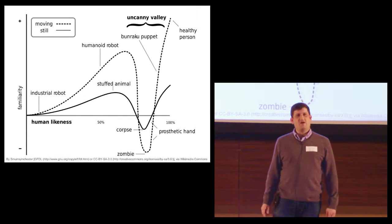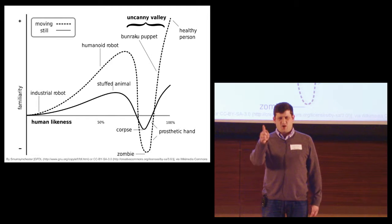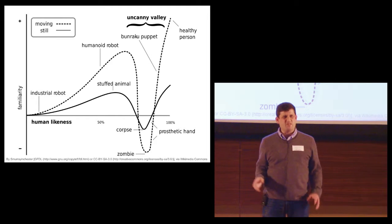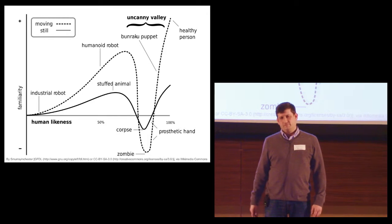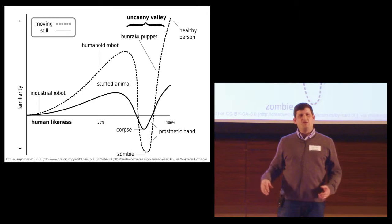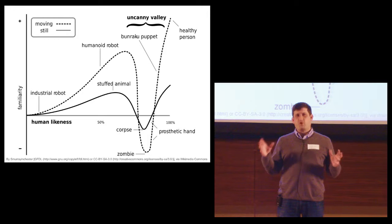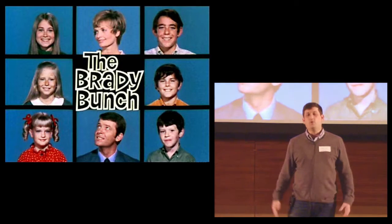A Japanese roboticist came up with the term uncanny valley to describe the deep feeling of unease you get when something is almost but not quite right as a human. To take advantage of that, we need a grid of perfect human faces, which TV provides.